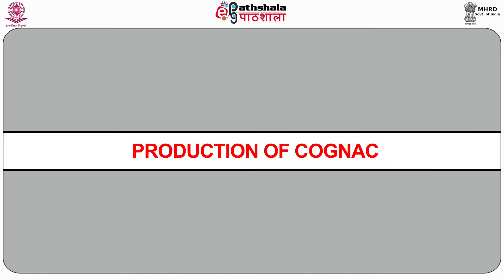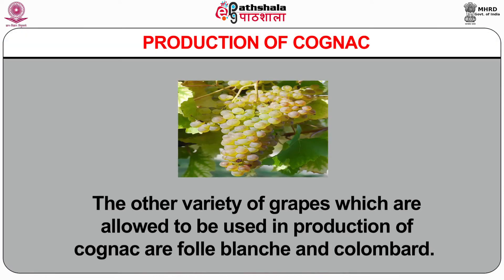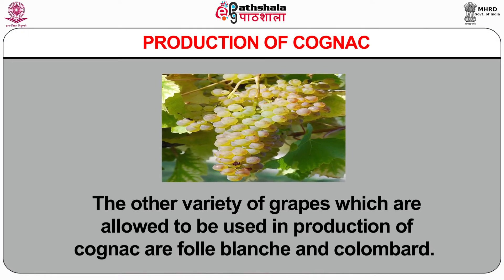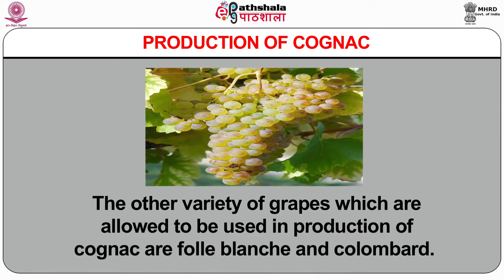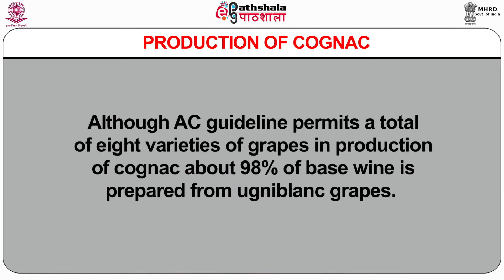Now let's discuss the production process of Cognac. Cognac is produced in the Cognac region of France. The wine used in distilling Cognac is made primarily from the Saint-Émilion grapes, also known as Ugni Blanc. Other varieties allowed are Folle Blanche and Colombard. Although AC guidelines permit a total of eight varieties of grapes, 98% of base wine is prepared from Ugni Blanc grapes.